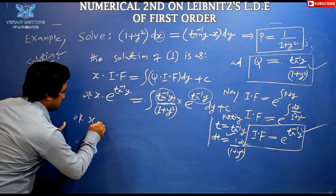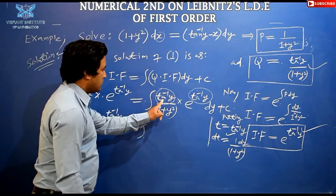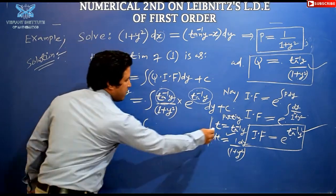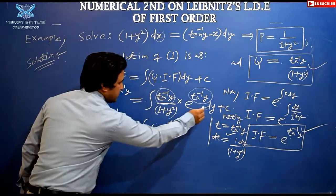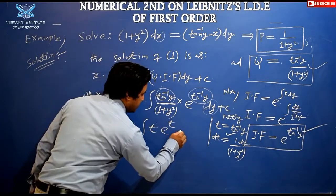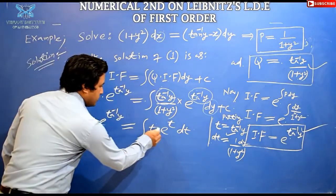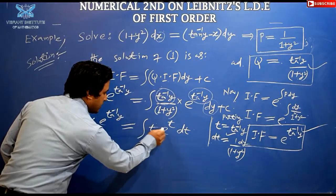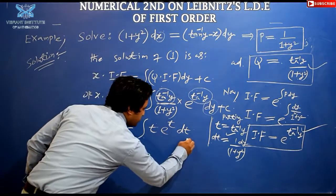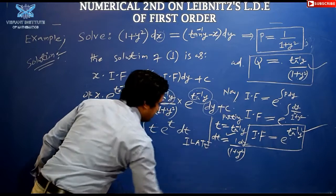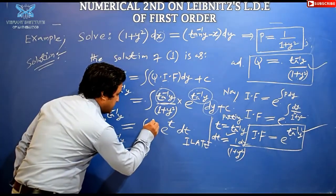After substitution, x · e^(tan⁻¹y) = ∫ t · eᵗ dt + c. There are two functions t and eᵗ, so we use integration by parts using the ILATE rule. Here t is algebraic (first) and eᵗ is exponential (last).